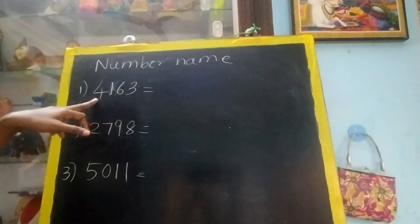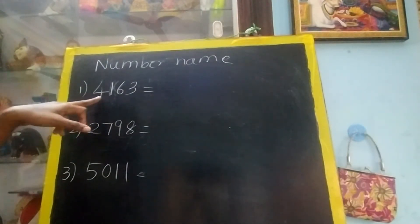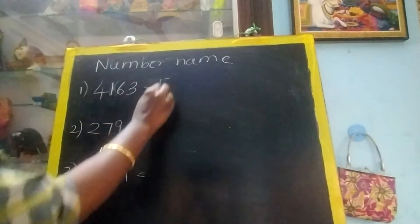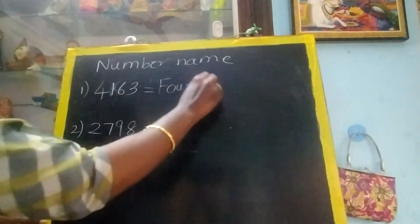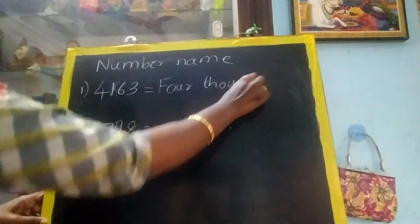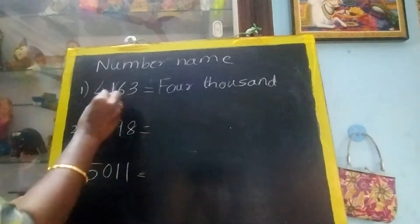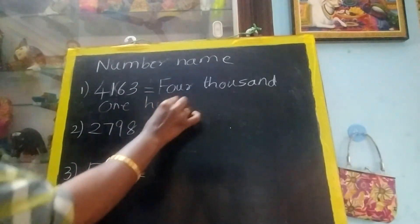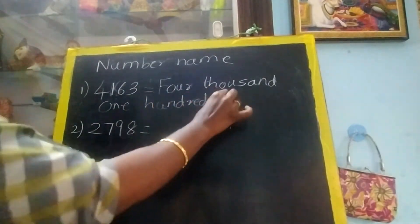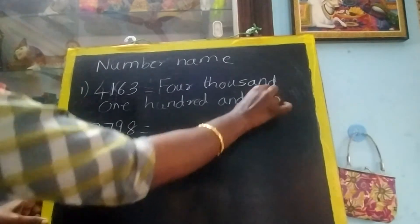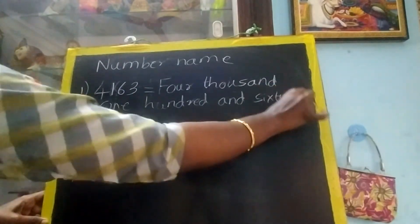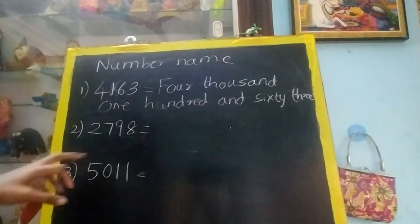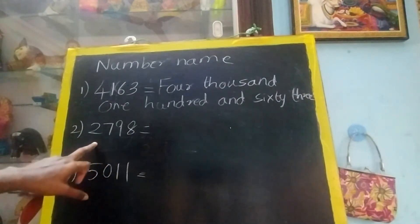So you have to read 4163. How will you write 4,000 spelling? After this, 'and' will not come. So now read 1s, 10s, 100s, 1000s — this is 1000.